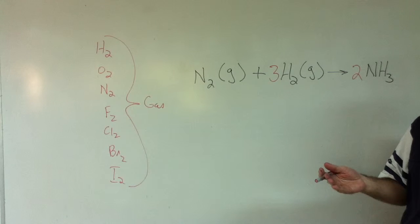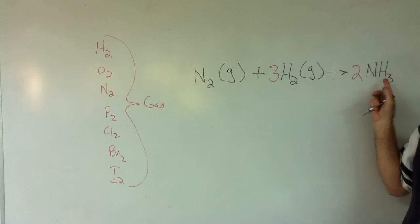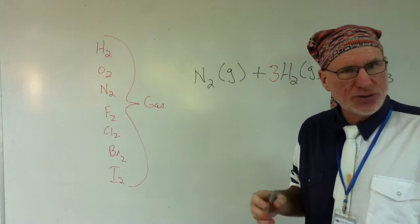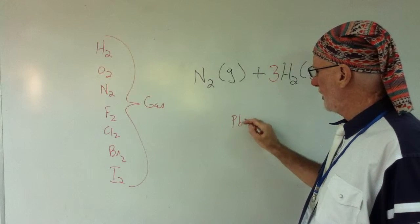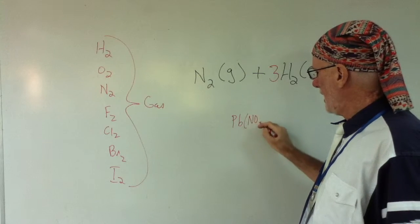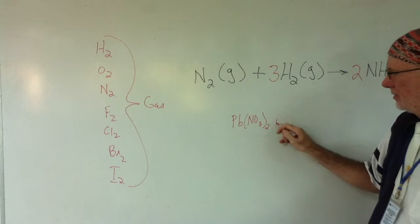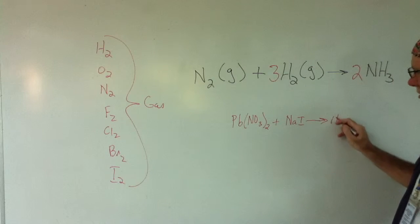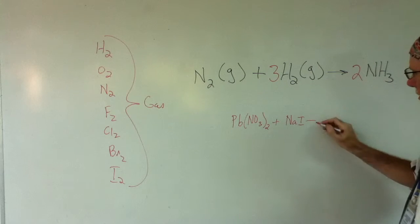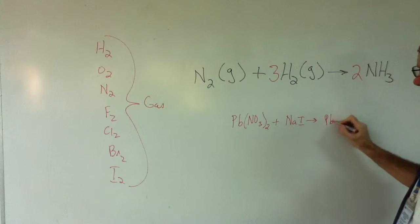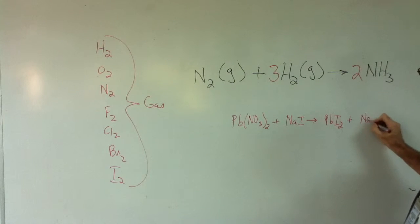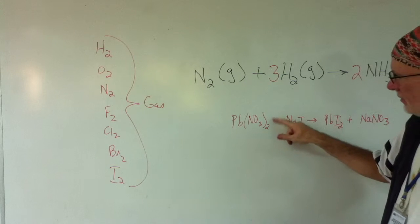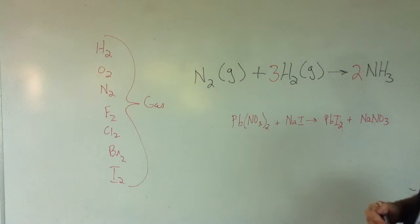Now, we didn't put conditions in the last two videos, but let me do that really quickly. The second equation I used on the second video: I had lead nitrate plus sodium iodide yields lead iodide plus sodium nitrate. Look at what's not here. Conditions.